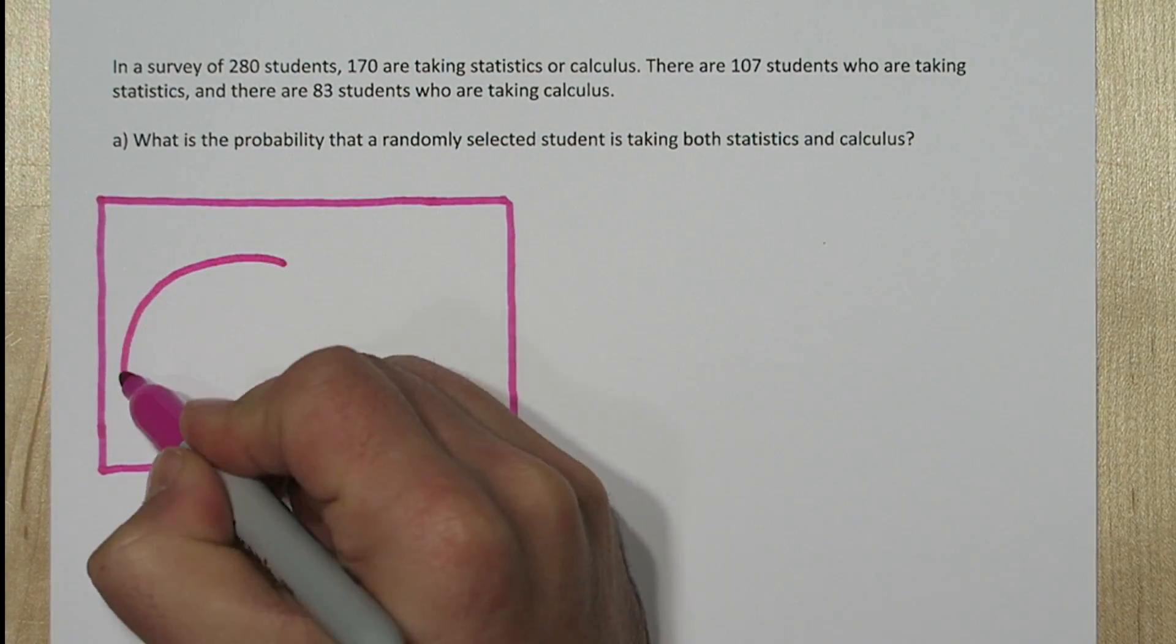I like to solve problems like this with Venn diagrams. So we'll start by drawing a rectangle to represent all 280 students, and we'll make a stats bubble and a calculus bubble.